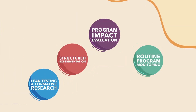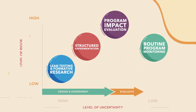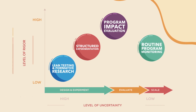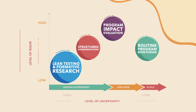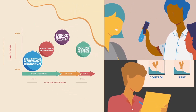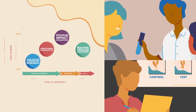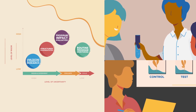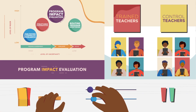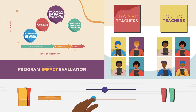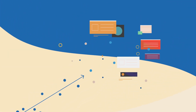There are many different evaluation and adaptive learning approaches to choose from, so here's a framework to help you. When there's a lot of uncertainty about what will work, less rigorous approaches can quickly rule out flawed assumptions, getting you closer to what might work, more quickly and affordably. When there's more certainty and you have designed a program that you feel confident in, investing in rigorous impact evaluations can confirm whether you're achieving your intended outcomes.